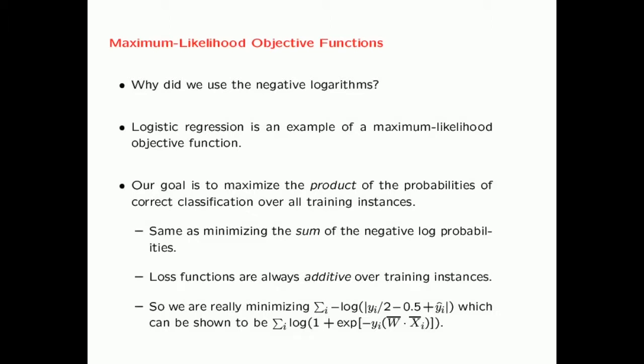Why did we use the negative logarithm to create this minimization function? Logistic regression is an example of a maximum likelihood objective. In maximum likelihood methods, you want to maximize the probability that all instances in your training data are correctly classified. Under the independence assumption across training instances, you maximize the product of probabilities of correct classification. Taking the logarithm converts the product to a sum, and taking the negative logarithm converts the maximization into a minimization problem — giving an additive minimization, which is what loss functions are all about.